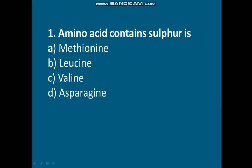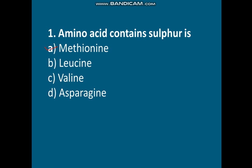Question one: the amino acid containing sulfur. Options are: A) Methionine, B) Leucine, C) Valine, D) Asparagine. They are asking which amino acid contains sulfur. The correct answer is option A, that is Methionine.